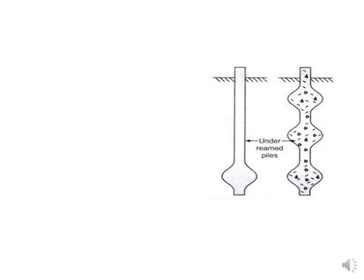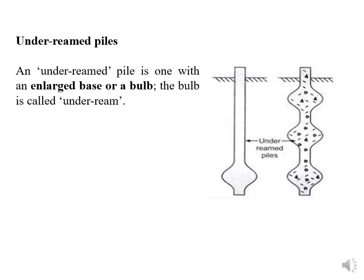Today we shall go for the underreamed piles. An underreamed pile is one with a large base or a bulb. The bulb is called the underream. This is the pile and this is the underream, also called a bulb.